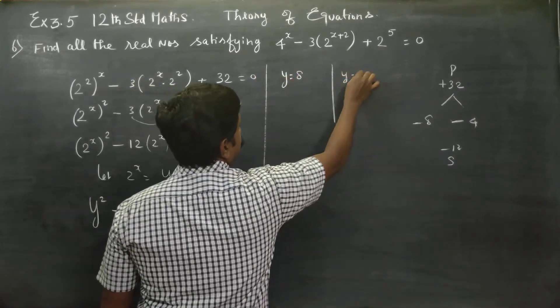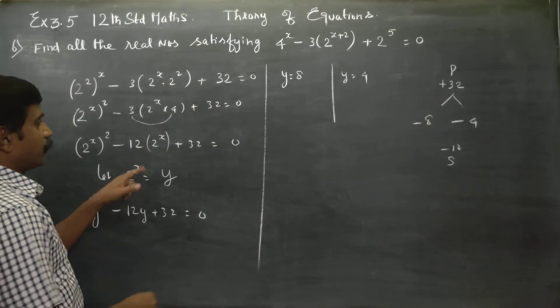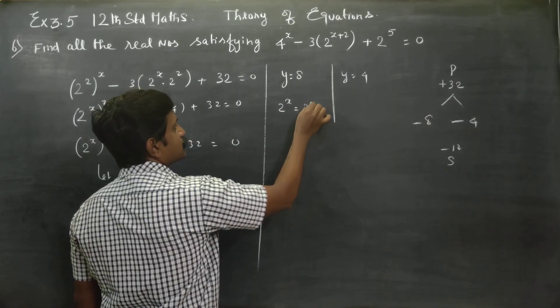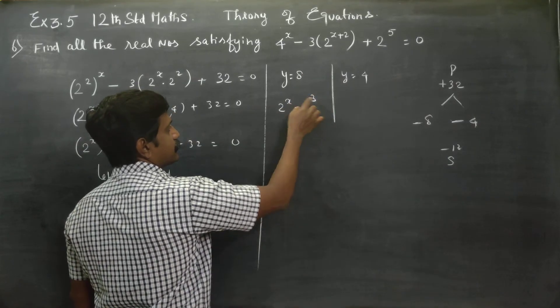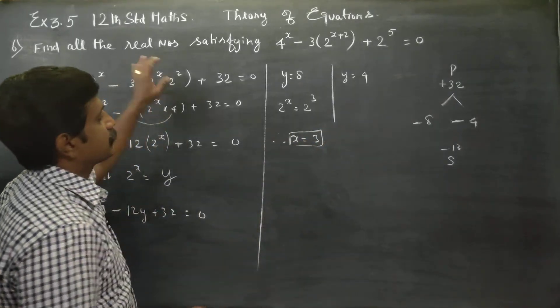Y equals 8 and y equals 4. What is y? Y is 2^x. So 2^x equals 8 can be written as 2^3, and bases are same. Therefore x value is 3.